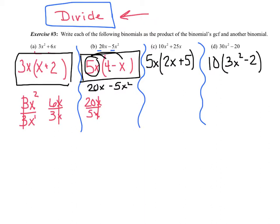So you've seen my answers, and remember, you can always check just by taking this term and distributing it. 5x times 2x is 10x squared, and 5x times 5 is 25x. 10 times 3x squared is 30x squared, and I have that minus sign. 10 times 2 is 20.